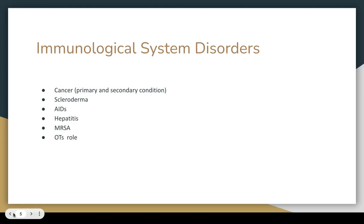For immunological system disorders, the big picture focus is cancer — both as a primary and secondary condition. We need to understand the etiology and risk factors because we keep coming back to education. We might be working with somebody who had a tumor resection in their brain but is seeing us for rehab because of weakness related to that surgery — so the weakness is the primary reason, and the cancer is the secondary condition.